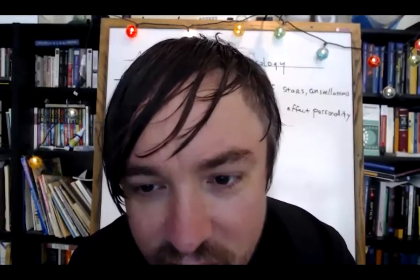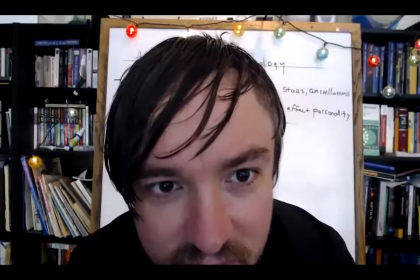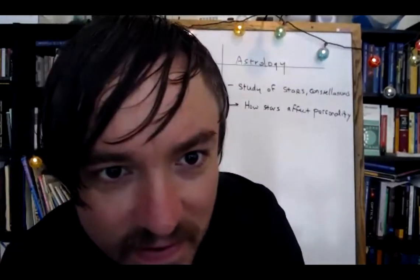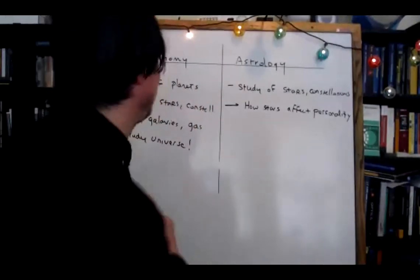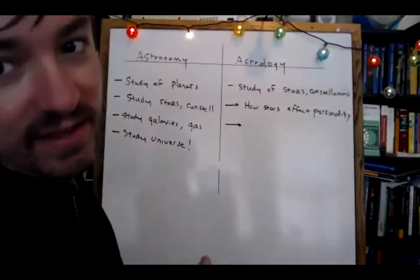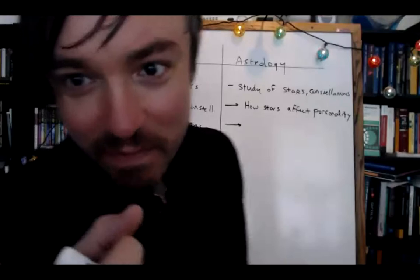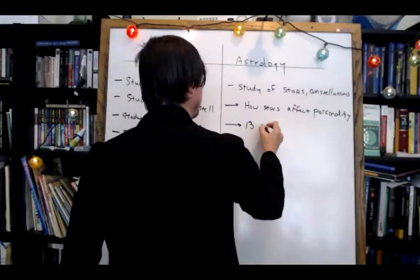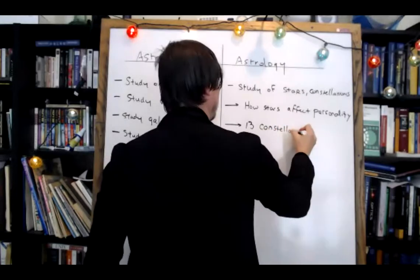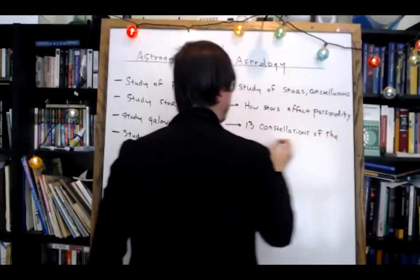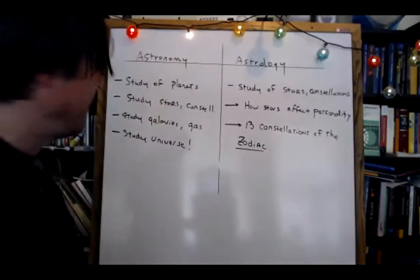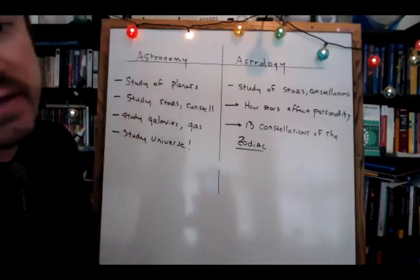Do you guys know anything else about astrology and how they study your personality? Are they interested in all the constellations or just some of them? Janabelle answers: zodiac signs. Yes — the zodiac signs. Do you know how many zodiac signs there are? There used to be twelve, but now there are thirteen — I'll tell you about that in a second. The zodiac is a ten-dollar vocabulary word that comes up in astronomy. I'll define it in a bit.